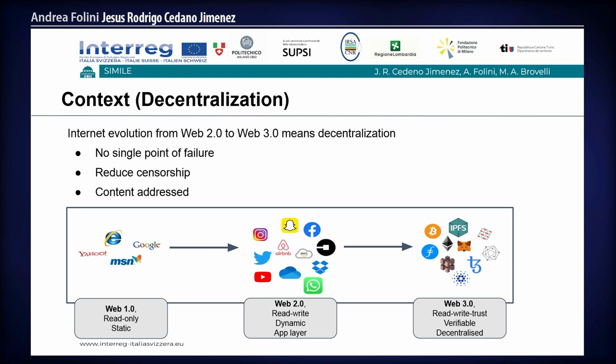The internet has evolved through different stages. The first stage was Web 1.0, which was the internet basically as a read-only network — static — and we could access web pages only in a static way. Then we saw the evolution to Web 2.0, with more interaction between users, so we have read and write. It's dynamic and has an application layer.